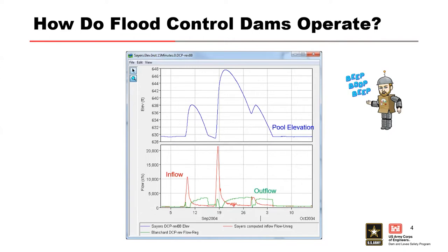In this picture, you can see the red is the inflow hydrograph, the green is the outflow hydrograph, and the blue in the top portion is the pool elevation hydrograph.